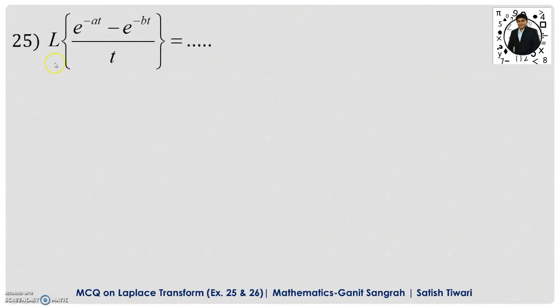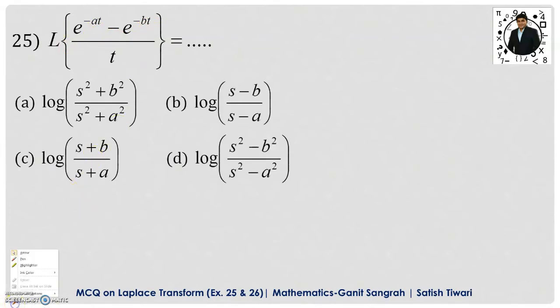Example number 25 is what? Laplace transform of e to the power minus a t minus e to the power minus b t upon t and the four options are given to you. So, here to get the Laplace transformation for this function, we have to apply the division by t property.